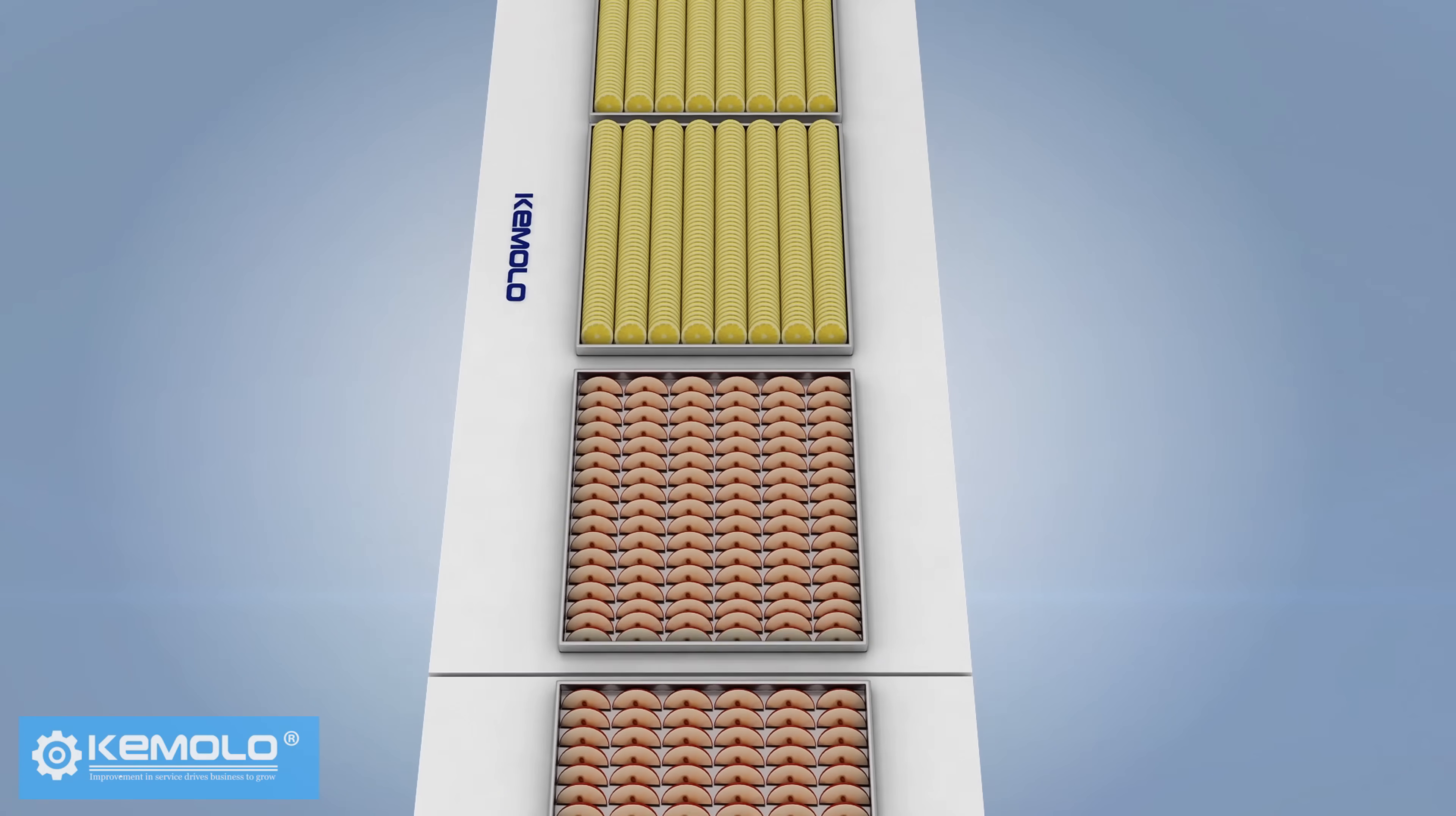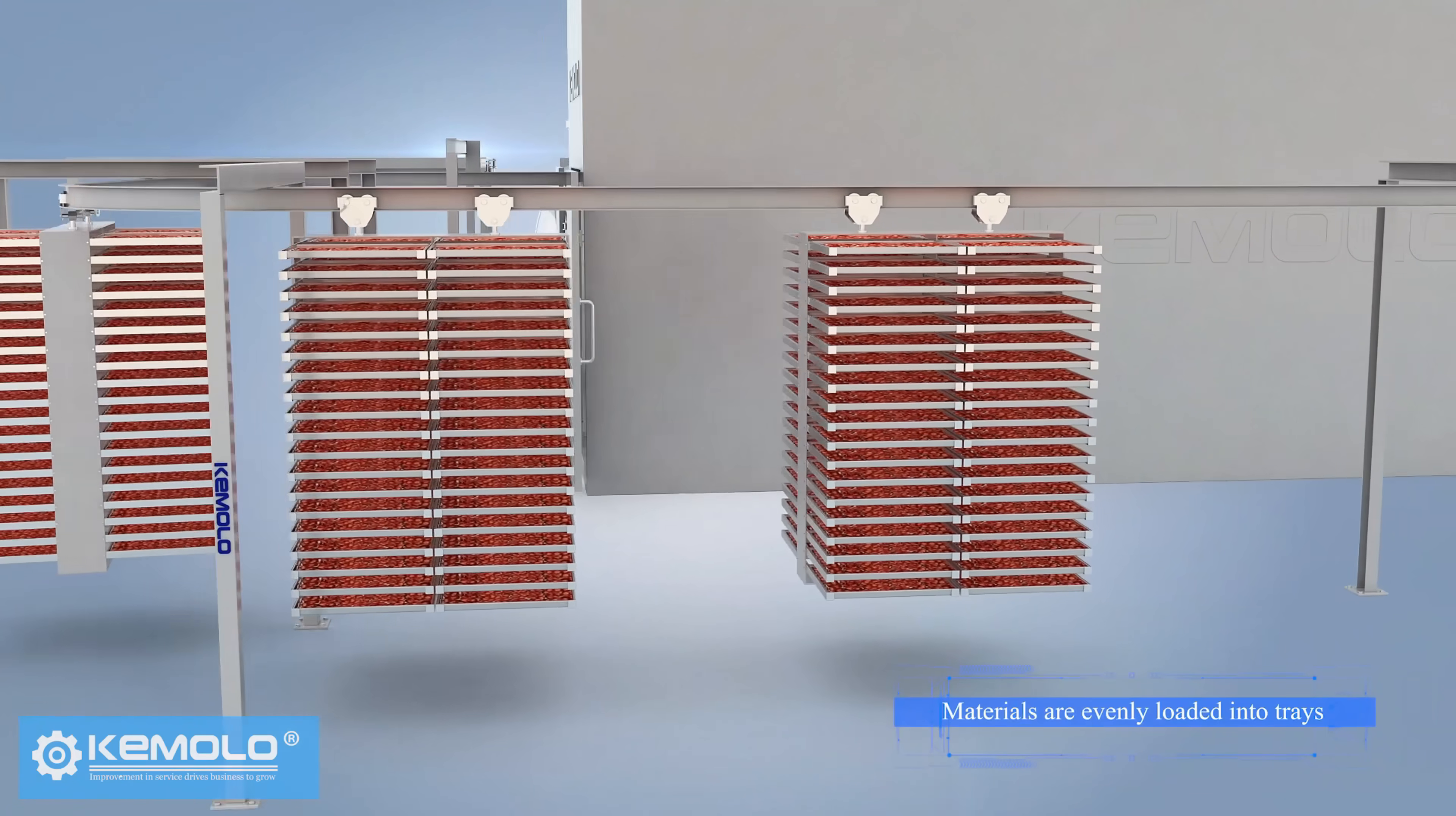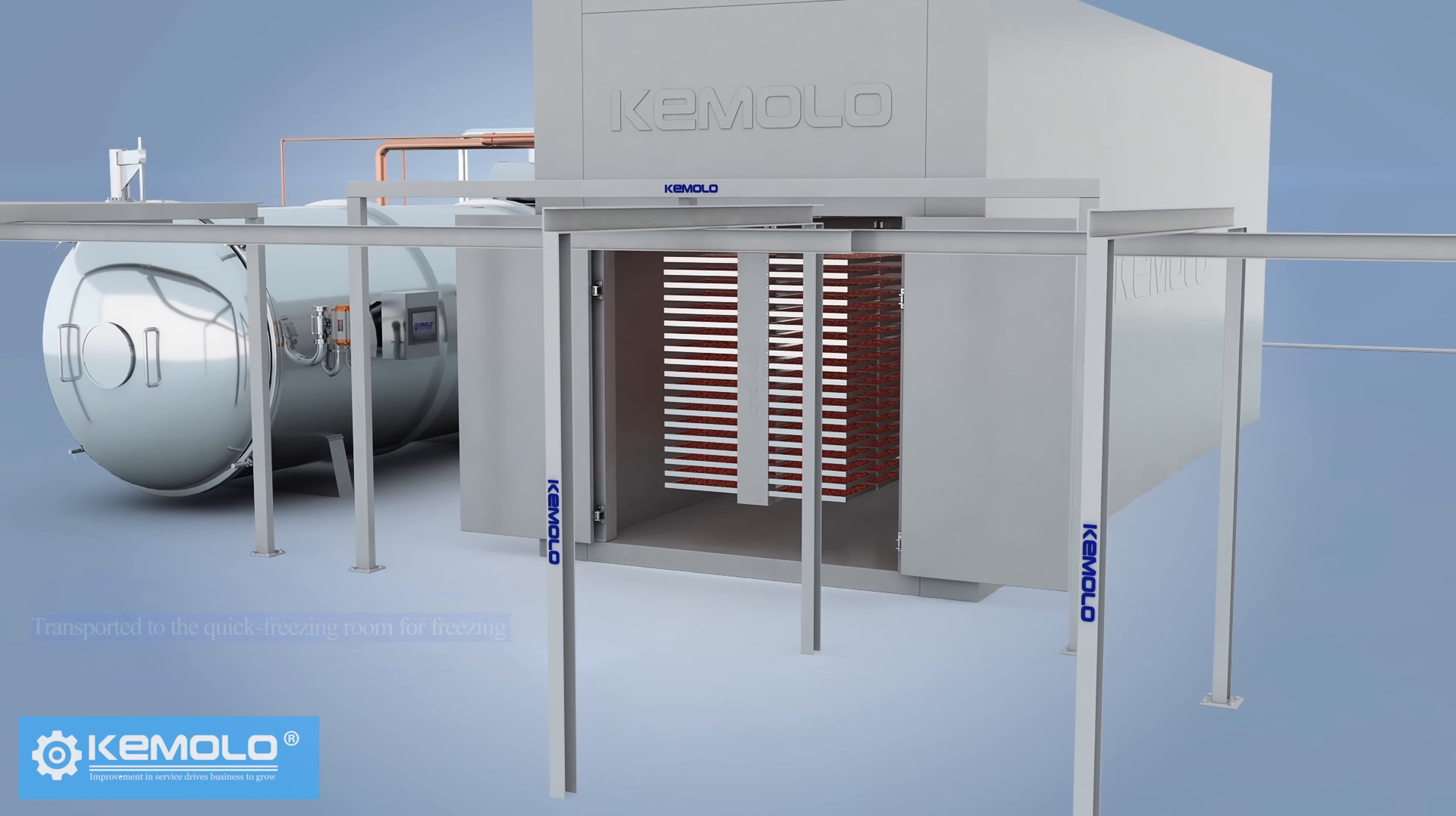First, wash and slice the fruits, vegetables or other pre-processed materials evenly and load them into product trays. The material is transported to the quick-freezing room for freezing by trolley and track.